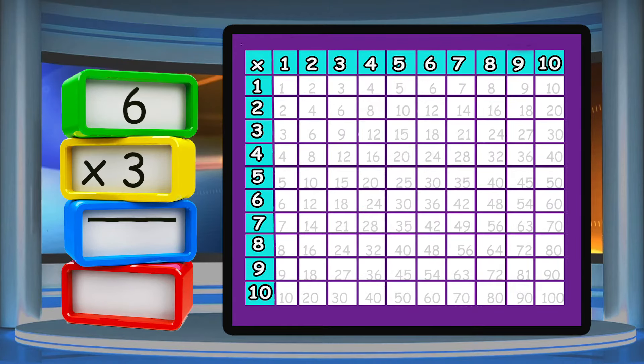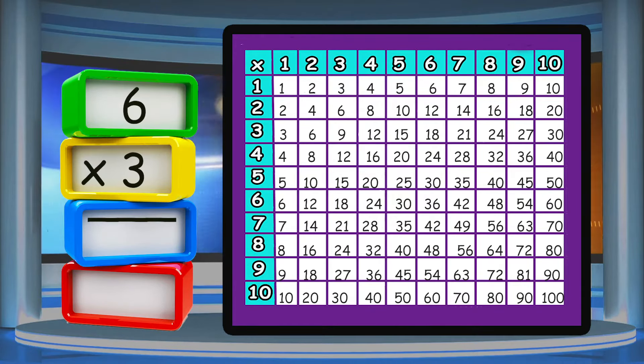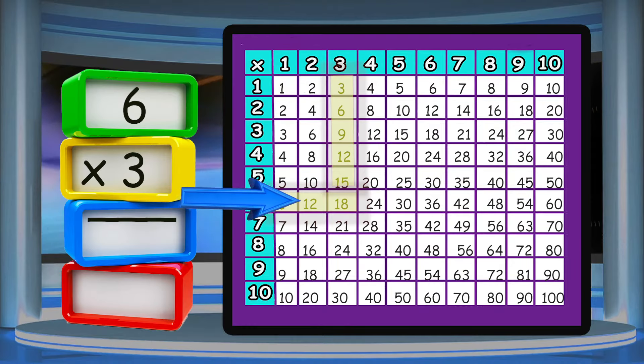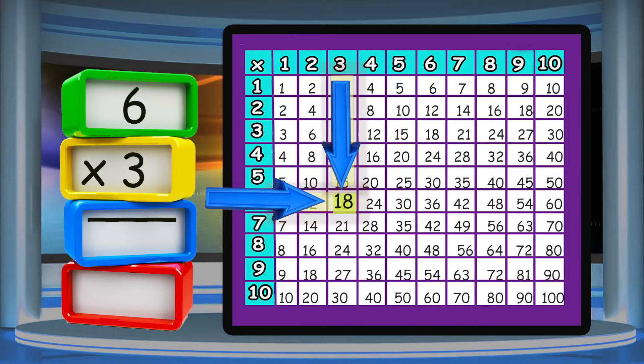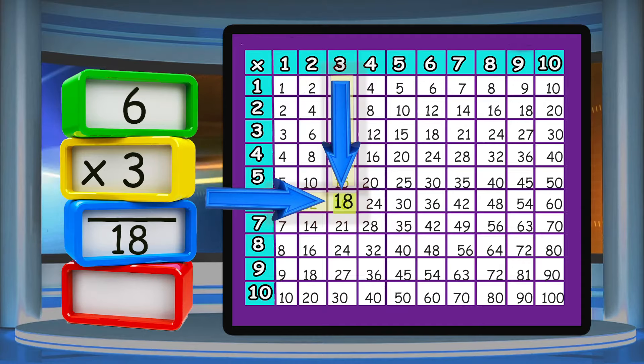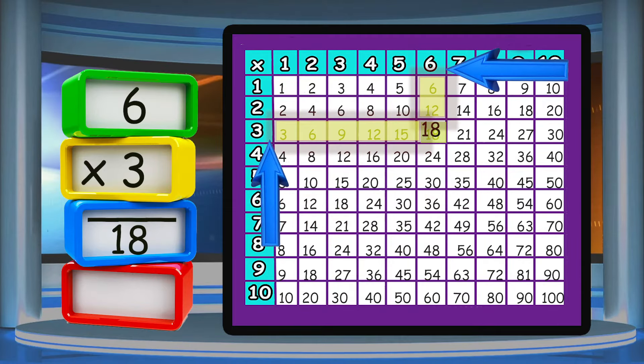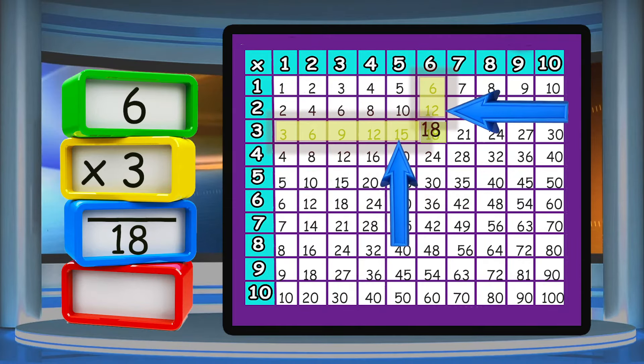For example, six times three. Follow the six on the side and go down from the number three. Where they meet together, you'll find eighteen, which is the answer to six times three. If you switch it around, you will still come up with the same answer.